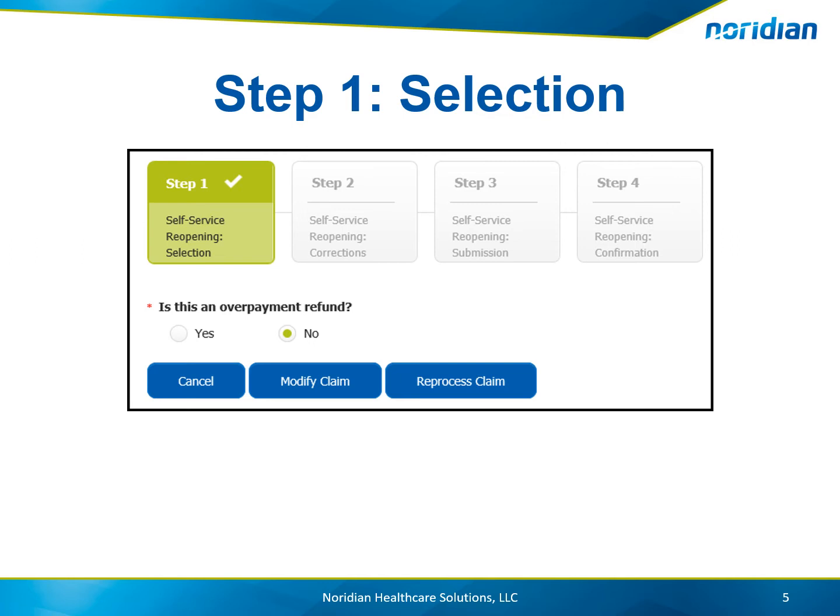If Reprocess is chosen, a pop-up box will be displayed asking if you are sure you want to reprocess. Choose Submit and the claim will display. Scroll down and choose the check box to verify the changes are accurate and choose Submit Request.